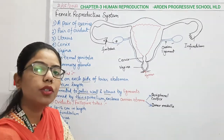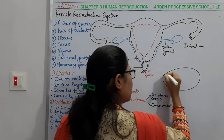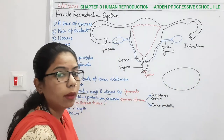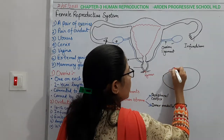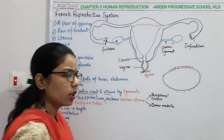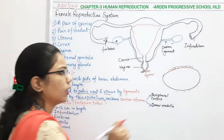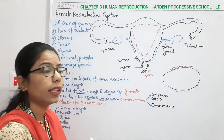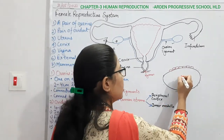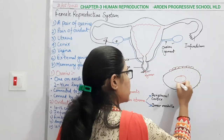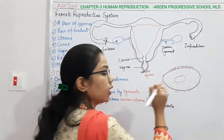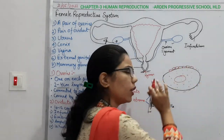The ovary is covered by some cuboidal epithelium cells — this is the epithelium surrounding the whole ovary. It has a germinal layer, and inside it there is some stroma. This whole part present inside the ovary is known as the stroma, and the stroma is divided into two zones: the peripheral zone — also called the cortex — and the medullary region, known as the medulla.